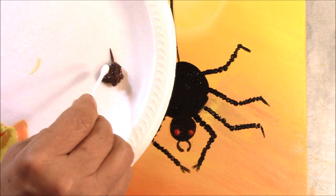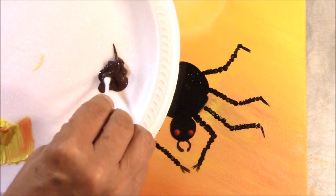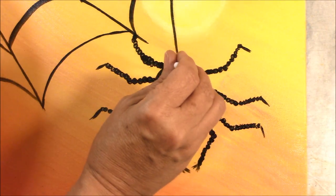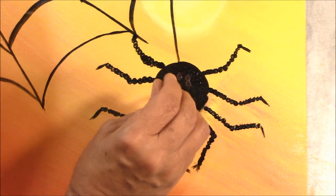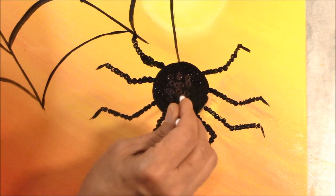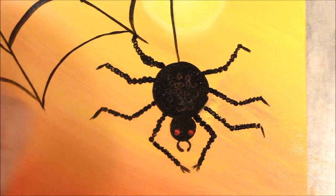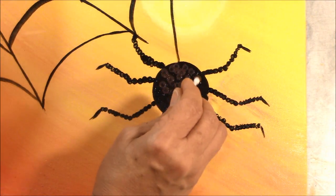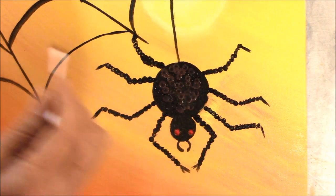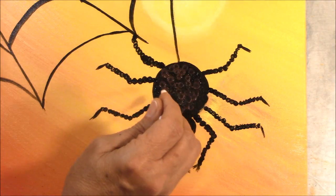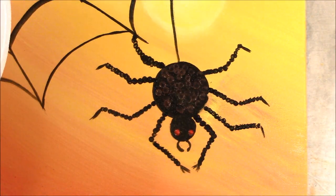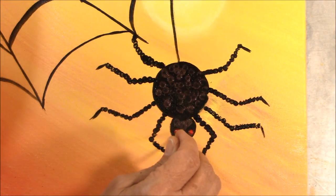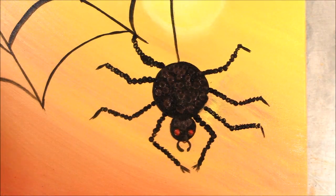Okay, so now to give my spider a little texture, I'm going to put some brown on my palette. And I'm just going to dab a little brown dots on his back. And a little bit on his head. Between his eyes. Just gives a little texture.